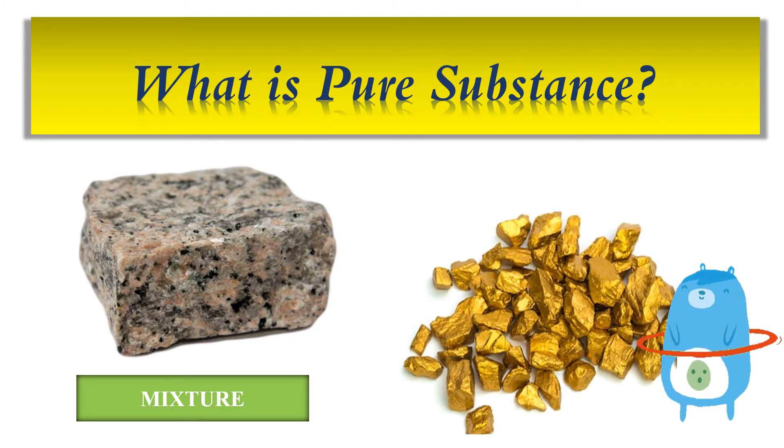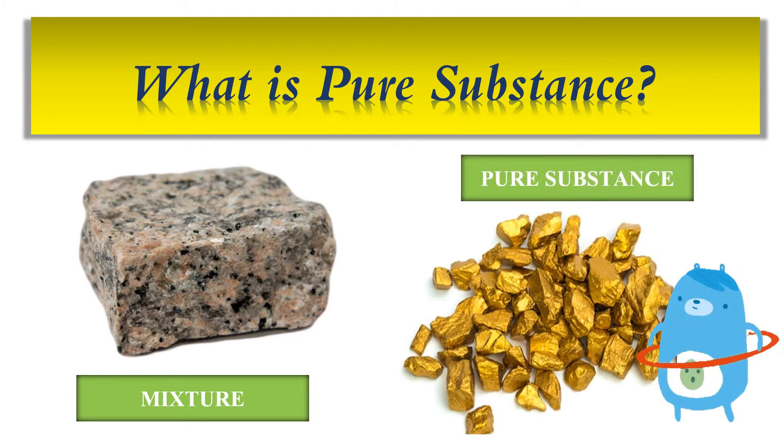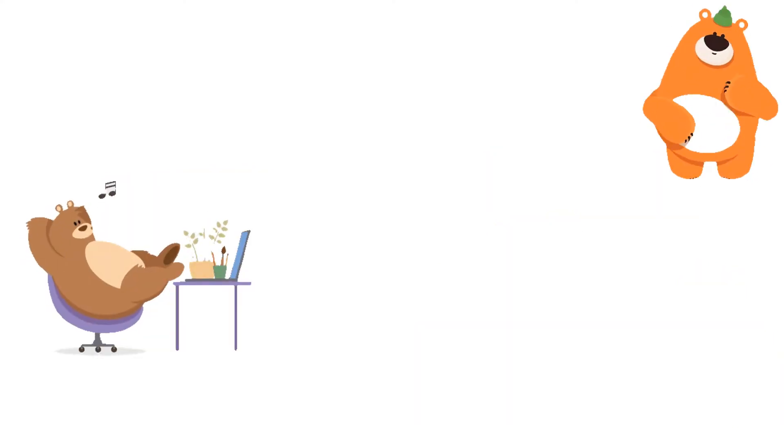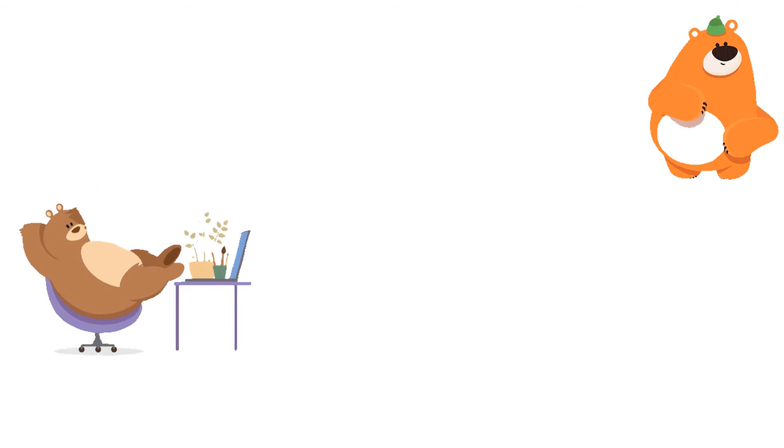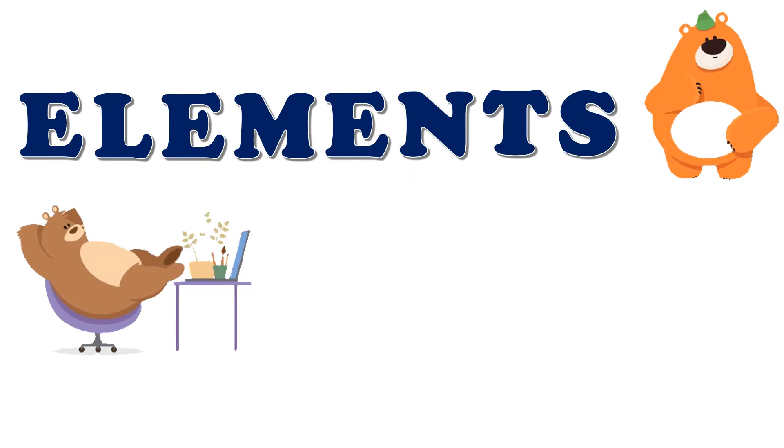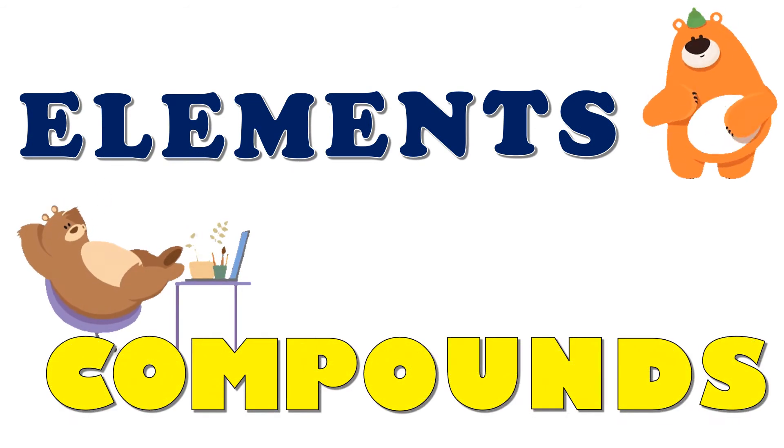On the other hand, gold is an example of pure substance because it is made up of only one kind of material and that is gold. Based from our previous discussion, we mentioned that pure substance can either be elements or compounds.